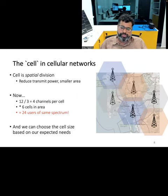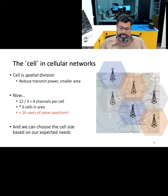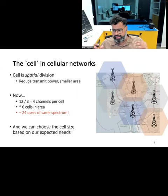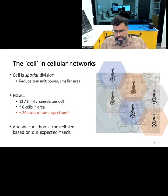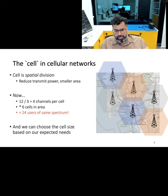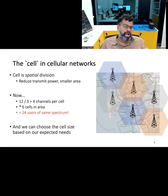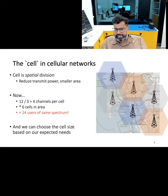So what should be the optimal size of a cell? It is decided by considering factors such as population density, user demand, infrastructure, and the base stations that can be deployed. Just as city planners decide on the number of buses and their routes, in cellular networks you consider these parameters to figure out how many networks you need to deploy within a city.